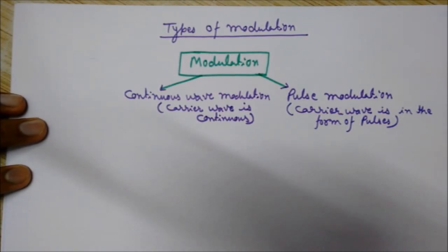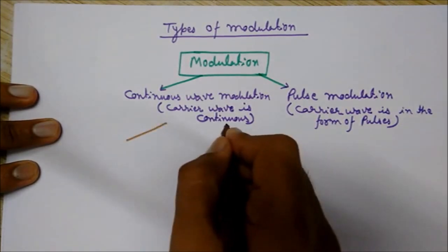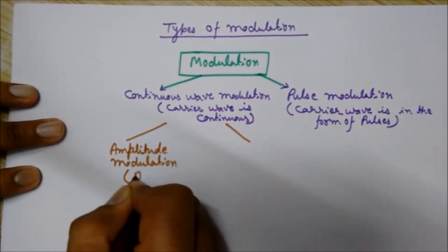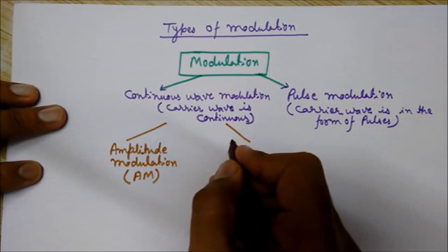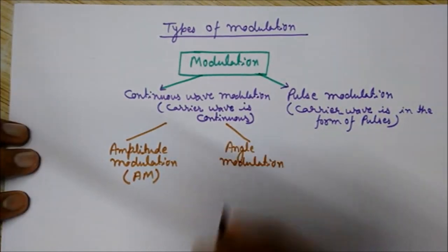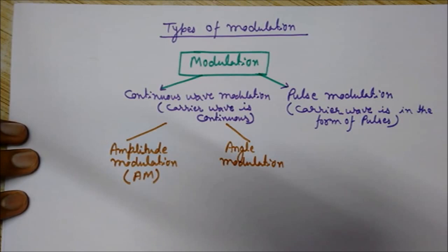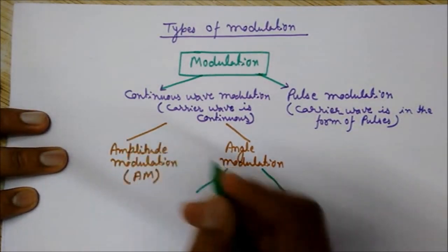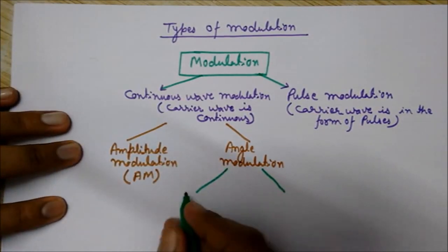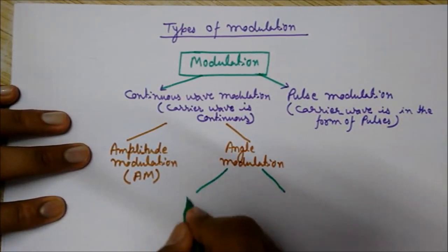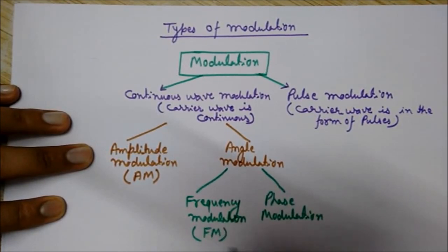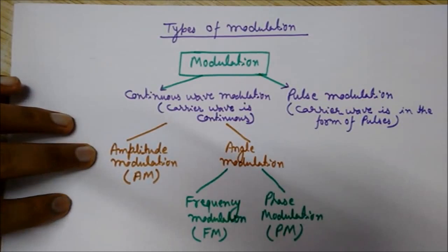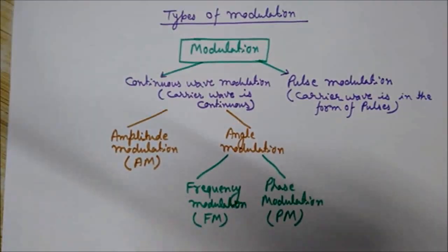Angle modulation can be classified into two types: frequency modulation, denoted as FM, and phase modulation, denoted as PM. These are the two types of angle modulation.